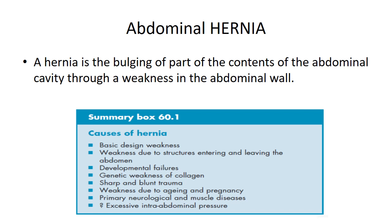A hernia is the bulging of part of the contents of the abdominal cavity through a weakness in the abdominal wall. Causes of hernia include basic design weakness, weakness due to structures entering and leaving the abdomen, developmental failures, genetic weakness of collagen, sharp and blunt trauma, weakness due to aging and pregnancy, primary neurological and muscle diseases, and excessive intra-abdominal pressure.